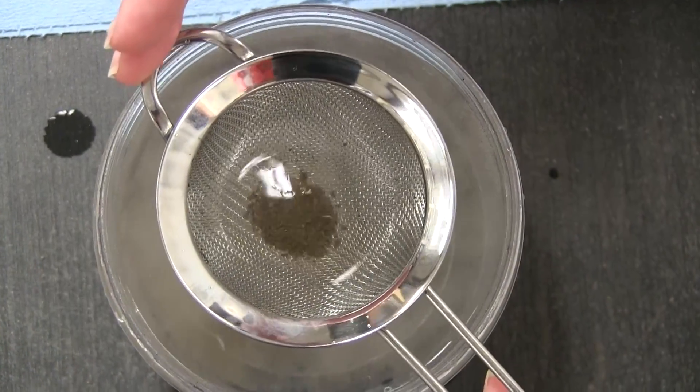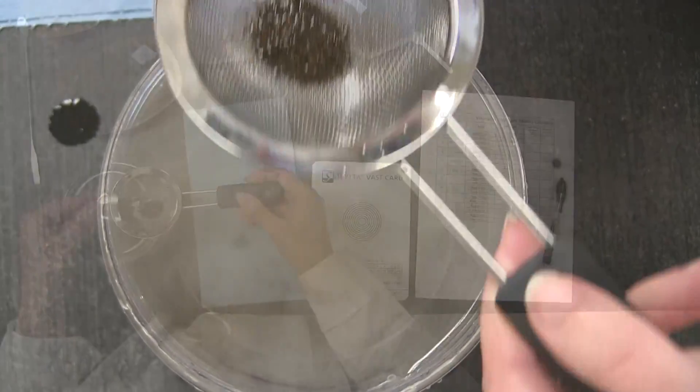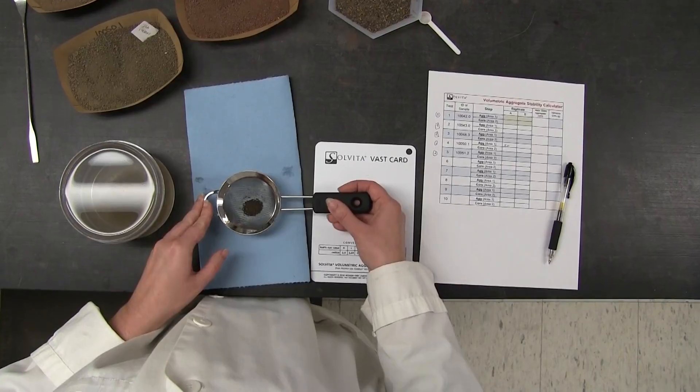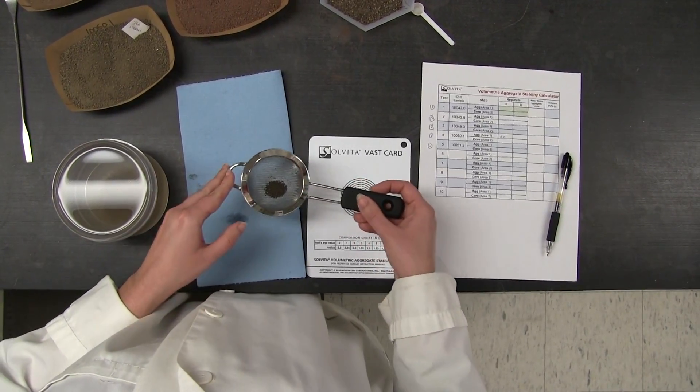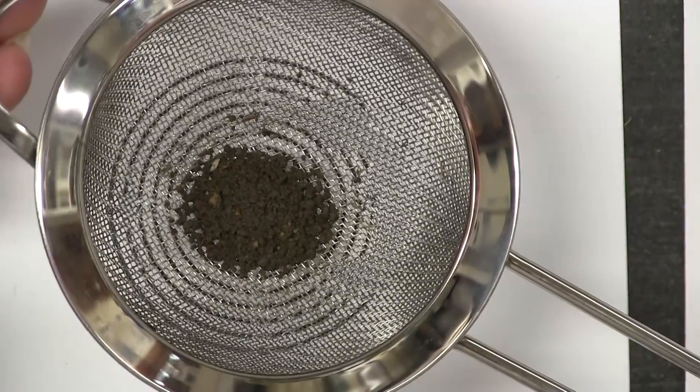So I thought, what if we exploit the volumetric aspect of aggregates and create a new rapid test that any lab can perform? This has resulted in the test we call VAST for volumetric aggregate stability.